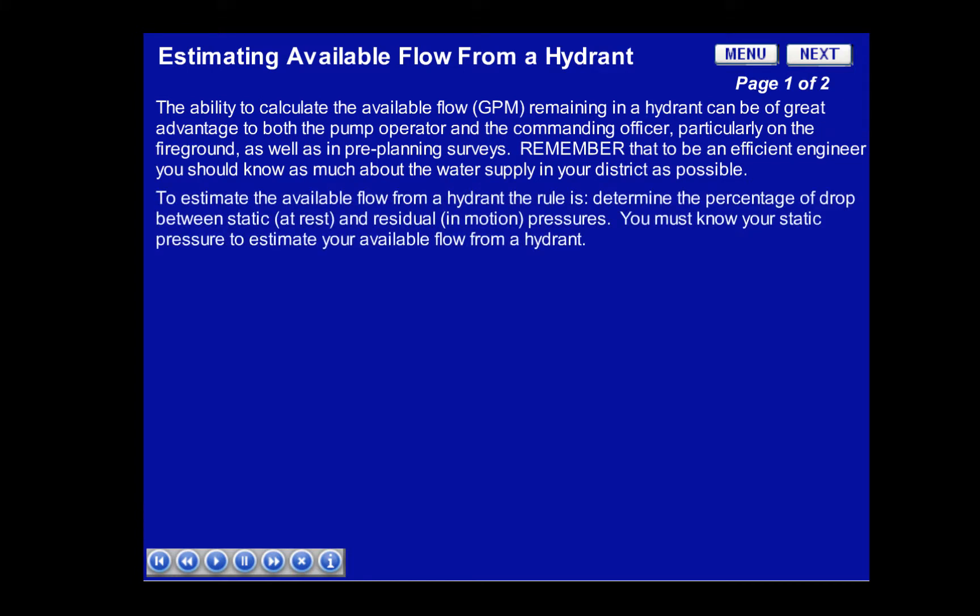To estimate the available flow from a hydrant, the rule is to determine the percentage of drop between static at-rest and residual in-motion pressures. You must know your static pressure to estimate your available flow from a hydrant.